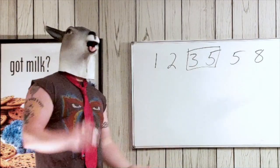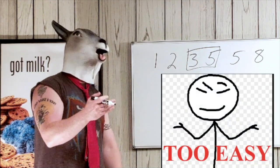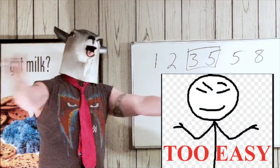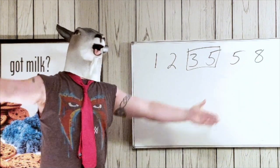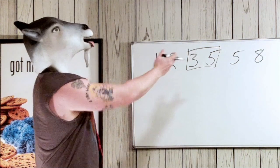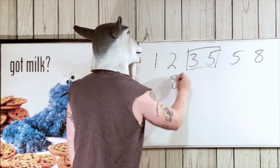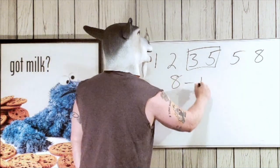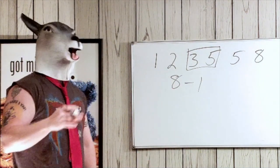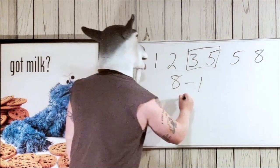The only thing left to do is find the range. Range is easy — it's how far apart the biggest and smallest numbers are. All we gotta do is 8 minus 1. Come on now, I know you don't need a calculator. 8 minus 1 is 7.